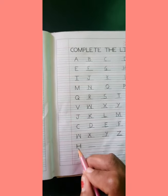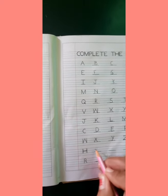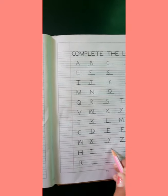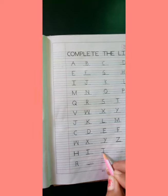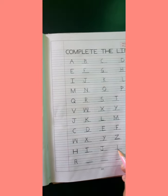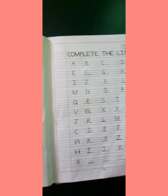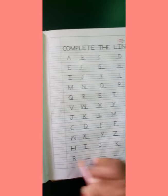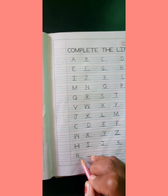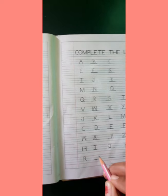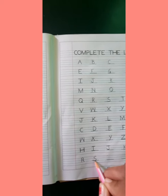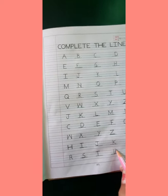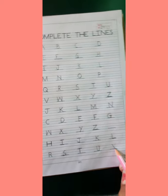Now children, come down. What letter is this? H. Then I. J. K. Then L. Now children, what letter is this? R. S. T. U.